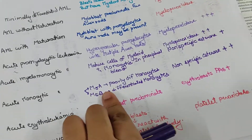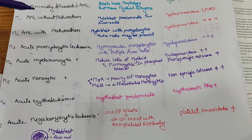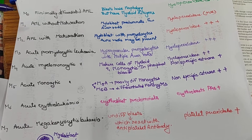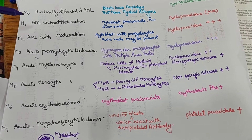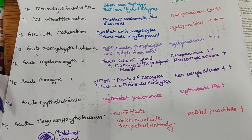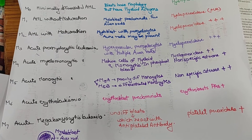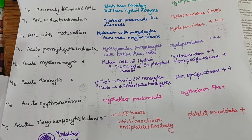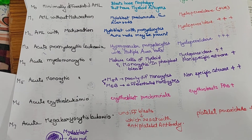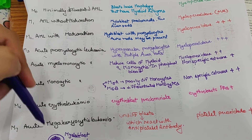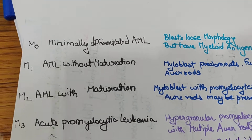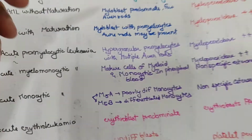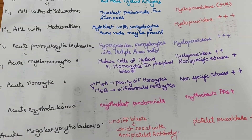Next is the FAB classification, in which AML is divided into types M0 to M7 — that is eight types. It looks difficult but it is very easy. The first column gives the morphological features, which we can identify by the name itself.